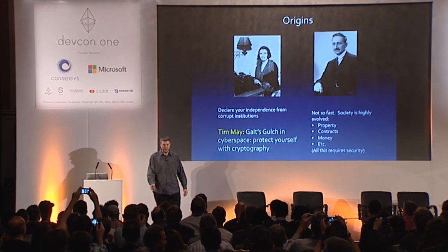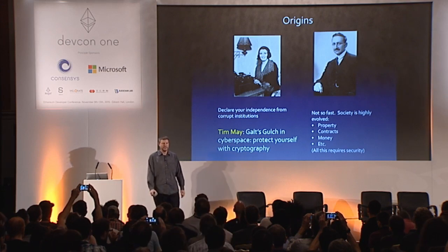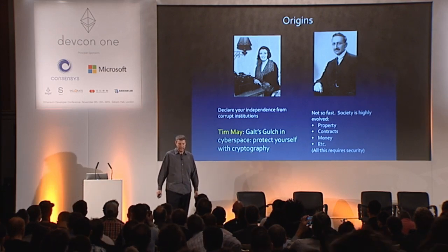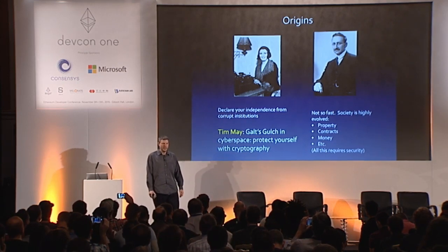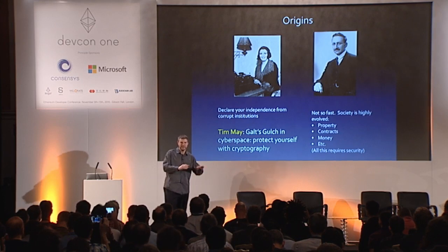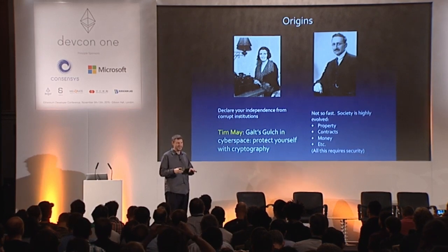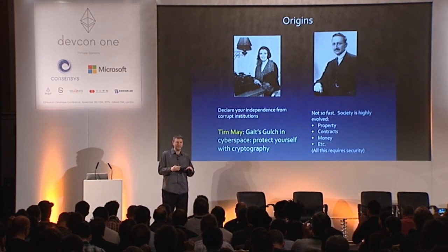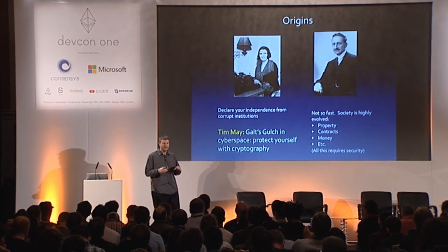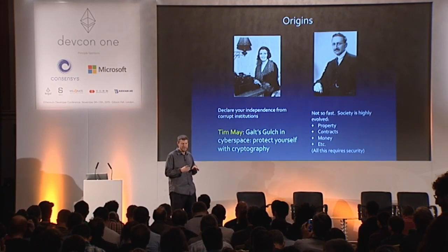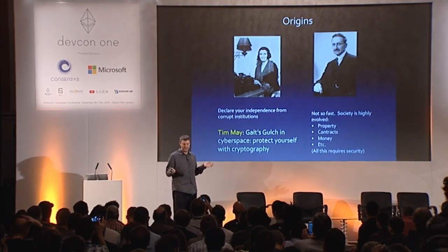To the left here we have Ayn Rand, to the right Frederick Hayek, who were big political and philosophical inspirations to the cypherpunks where many of these ideas came out of. She came up with the idea of Galt's Gulch, which is a place where you could form your own independent community and declare your independence from corrupt institutions and society — pretty much a complete fantasy when she wrote it, based on fake physics and stuff.